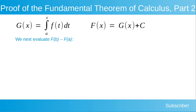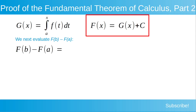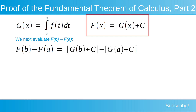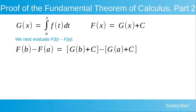We next evaluate F(b) minus F(a). To do this, we use our equation where F equals G plus c. We can express F(b) as G(b) plus c, and F(a) as G(a) plus c. When we subtract these terms, our plus c constants cancel, and we get that F(b) minus F(a) is equal to G(b) minus G(a).